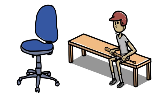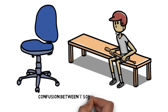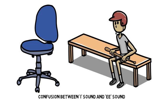The next mistake is to do with confusion between the I sound and E sound. So seat and sit. One is the noun, one is the verb. Seat, sit.